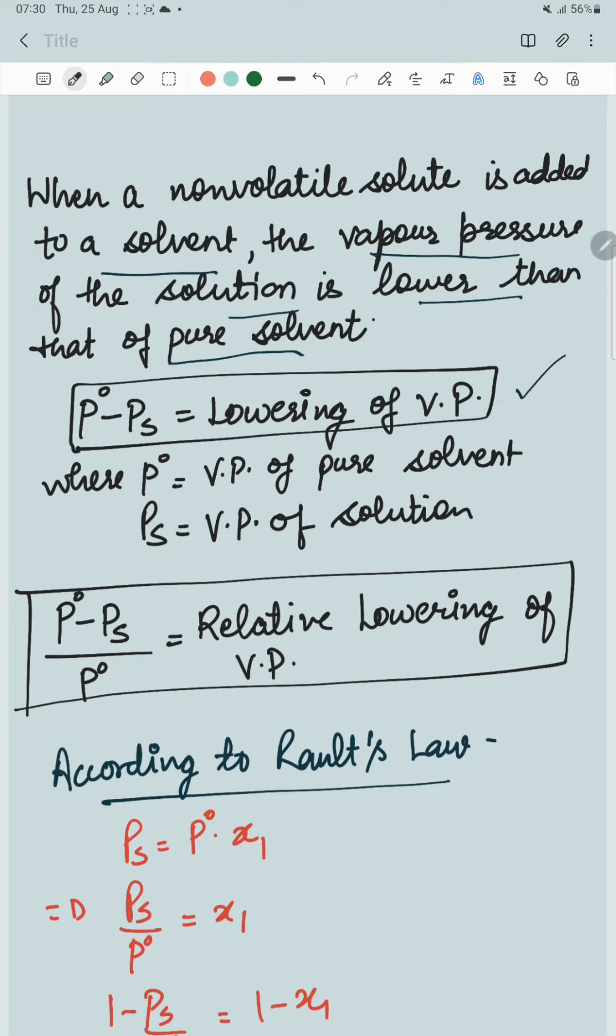So this is the vapor pressure lowering P0 minus PS, where P0 is the vapor pressure of pure solvent and PS is the vapor pressure of solution.